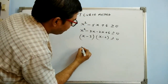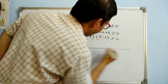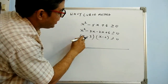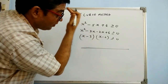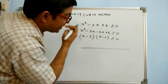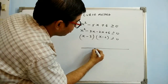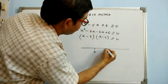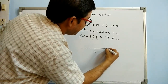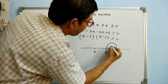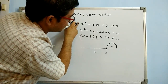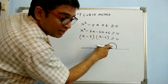In this method, we plot the critical values of x on the number line. Here x - 3 = 0 gives x = 3, and x - 2 = 0 gives x = 2. Place the smaller value to the left and the larger to the right. Make the intervals, with the first interval positive, since the sign of x² is positive.